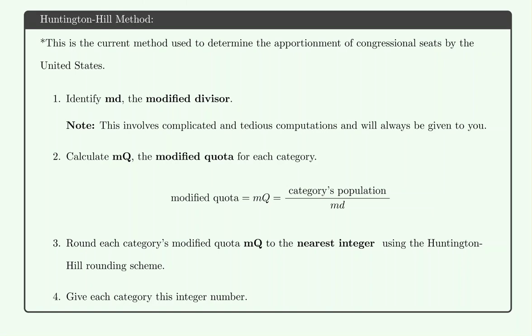In this video, we're going to look at the Huntington Hill method of apportionment. It is important to note that this is the current method used to apportion congressional seats by the United States.